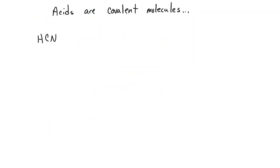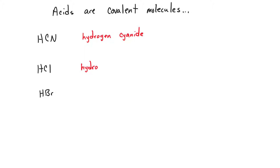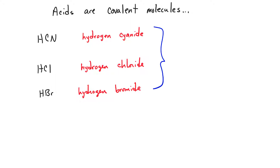Acids are covalent molecules as well. When acids are not dissolved in water — that is, they're not aqueous solutions — they can still be named as covalent molecules. In this case, HCN is just going to be hydrogen cyanide. Other acids like HCl or HBr could be named similarly: hydrogen chloride or hydrogen bromide. This is only when these acids are not dissolved in water.